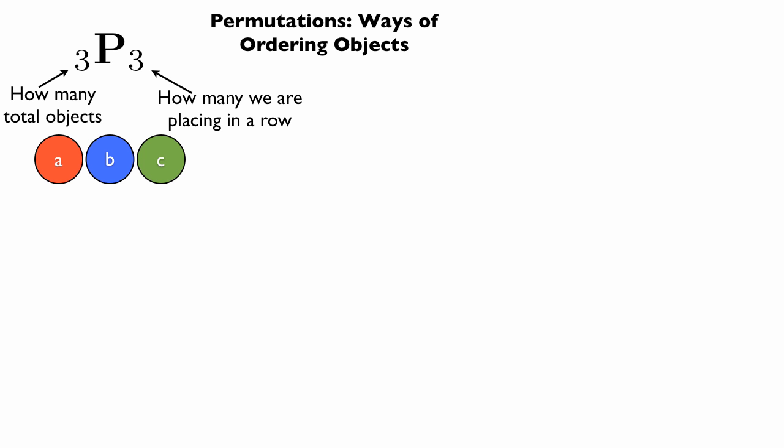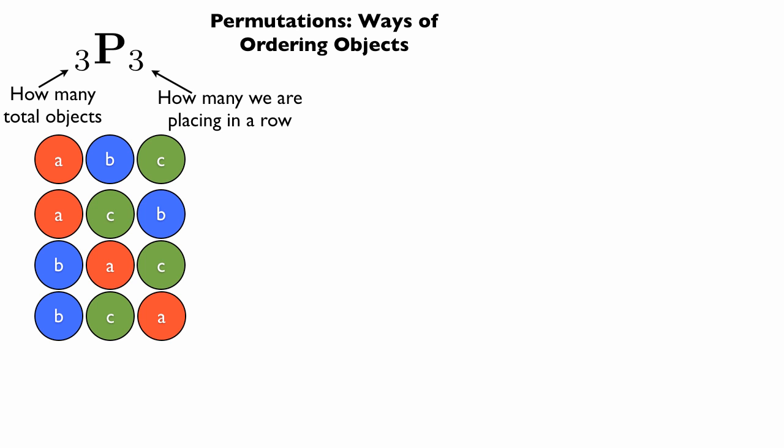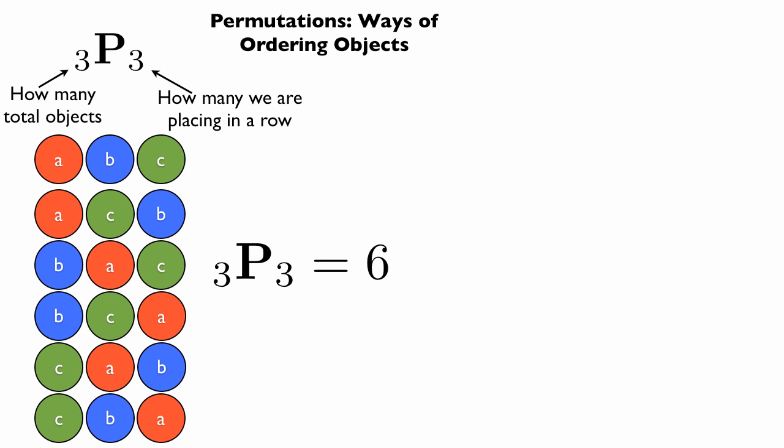So here's our three objects: A, B, and C. Here's one ordering of it. Here's another. Again, with A in the beginning, then I switch to B and C. I go through them in an orderly way. Now I'm going to do the B's at the beginning, and now the C's at the beginning, until I have all the possible combinations of three objects in a row, chosen from three unique objects. This is what 3P3 looks like, and because we have only six combinations, the answer is six. 3P3 equals 6.